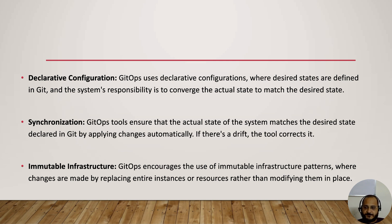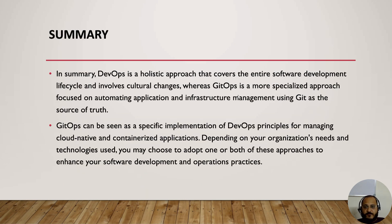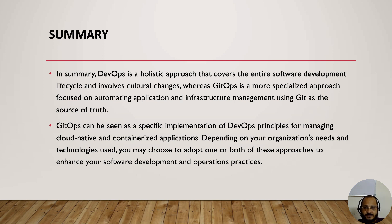In summary, DevOps is a holistic approach that covers the entire software development lifecycle and involves cultural changes, whereas GitOps is a more specialized approach focused on automating application and infrastructure management using Git as the source of truth. DevOps covers monitoring, testing, development, deployment automation, and more, while GitOps as a subset of DevOps majors in containerized applications and infrastructure management.